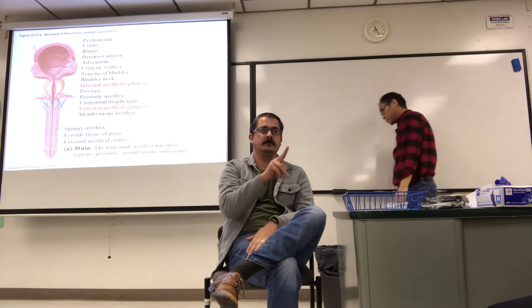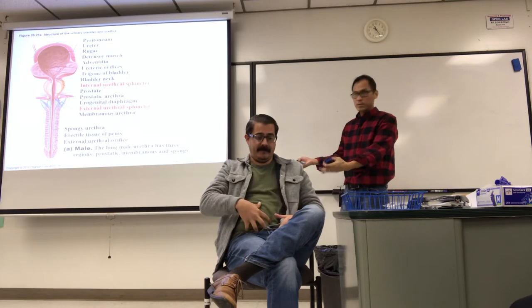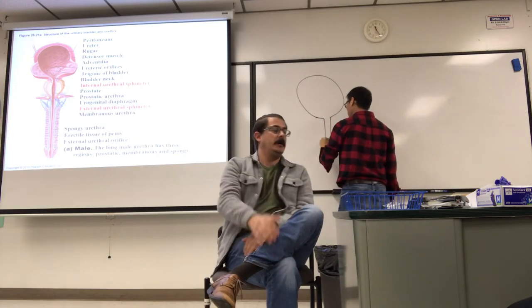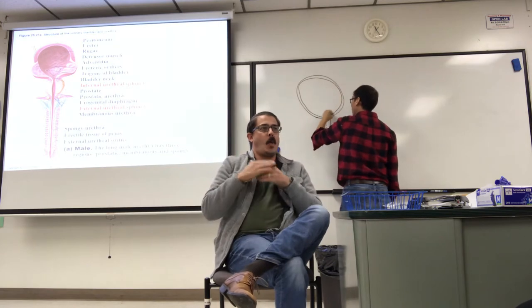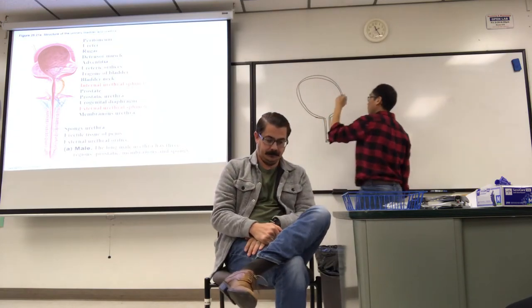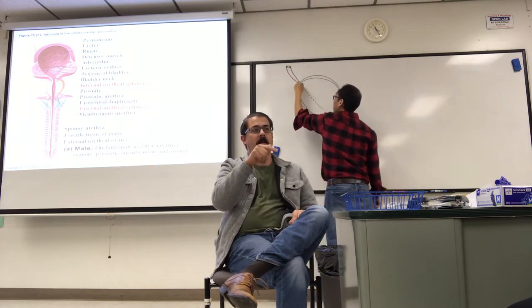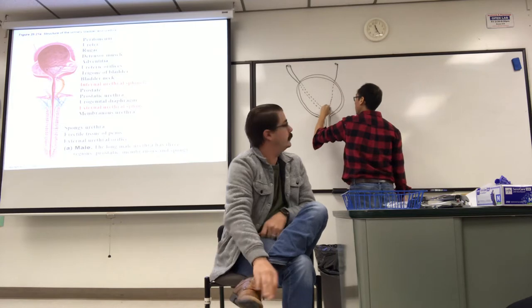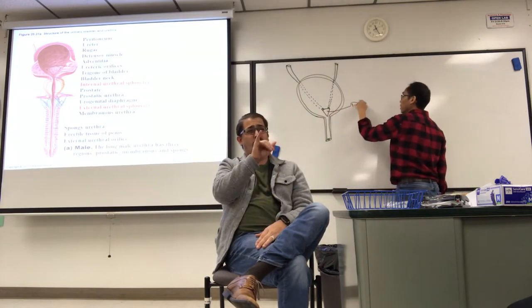The ureters descend retroperitoneally — remember the kidneys are retroperitoneal, the ureters are retroperitoneal. The bladder is in the pelvis, also underneath the peritoneum. You have two ureters that will descend retroperitoneally all the way to the base of the bladder. There will be a three-pointed triangle there called the bladder trigone.